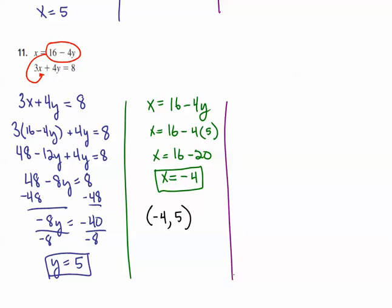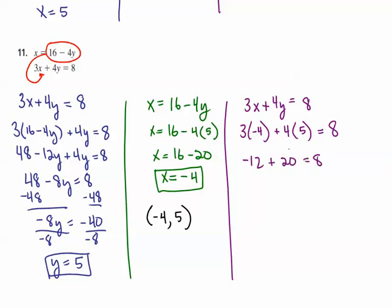Now I just need to check. I used x equals 16 minus 4y, so I'll use the other equation: 3x plus 4y equals 8. Plugging in: 3 times negative 4 plus 4 times 5 equals 8. That gives negative 12 plus 20, which is 8 equals 8. So it checks, and my ordered pair solution is indeed (negative 4, 5). We'll go on to the next.